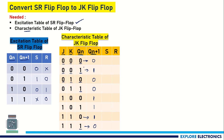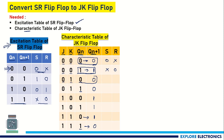Now we combine the two tables. For Qn=0, Qn+1=0 (J=0,K=0 case), looking at the excitation table, SR = 0,X. For Qn=1, Qn+1=1 (J=0,K=0 case), SR = X,0. For Qn=0, Qn+1=0 (J=0,K=1 case), SR = 0,X. For Qn=1, Qn+1=0 (J=0,K=1 case), SR = 0,1. For Qn=0, Qn+1=1 (J=1,K=0 case), SR = 1,0.